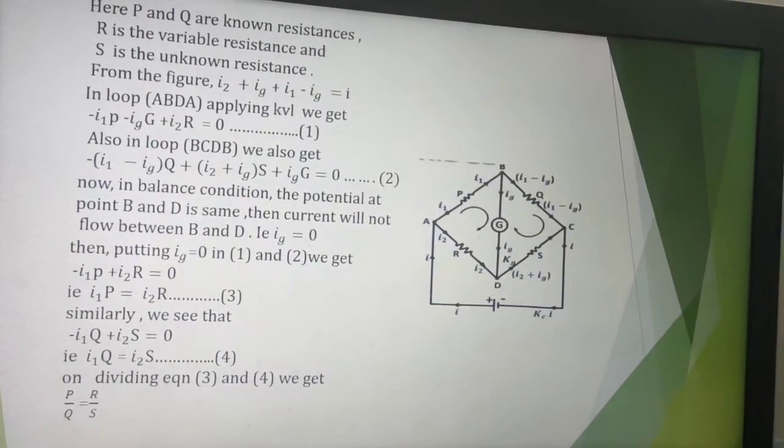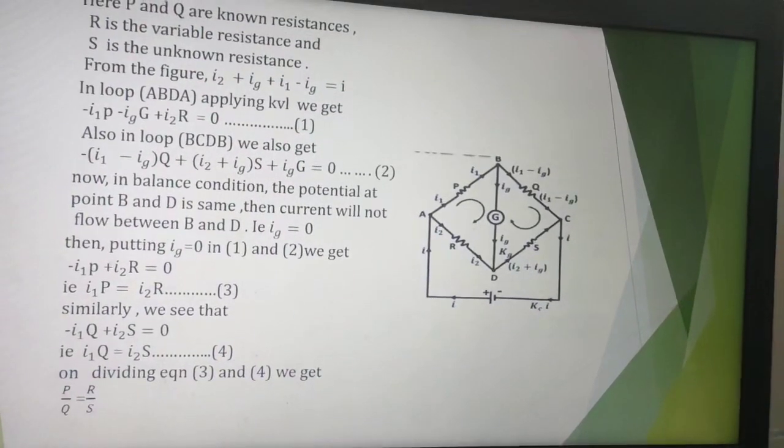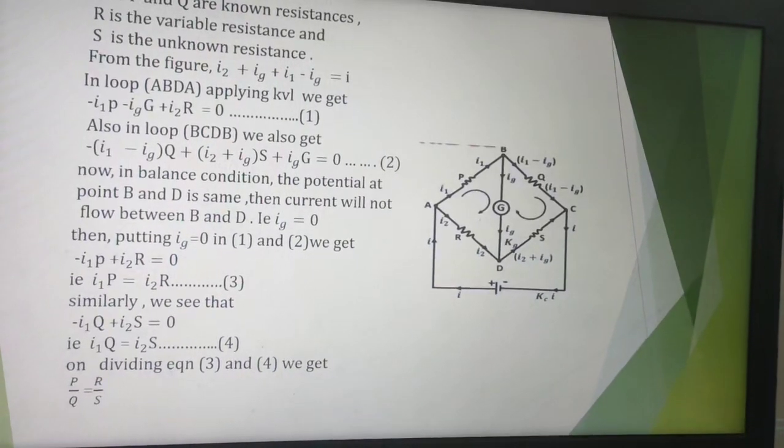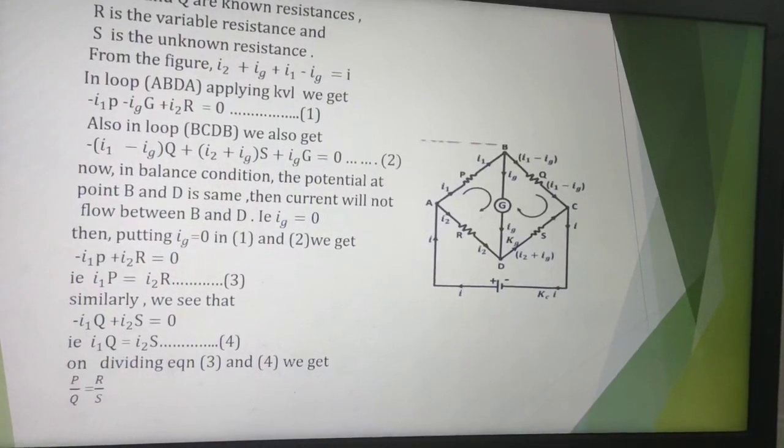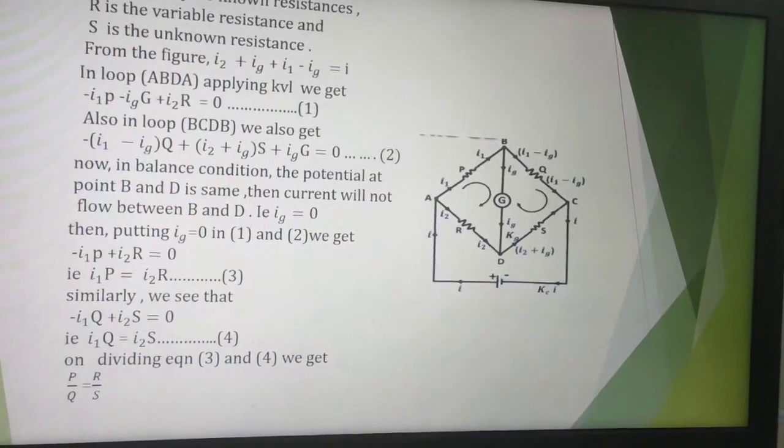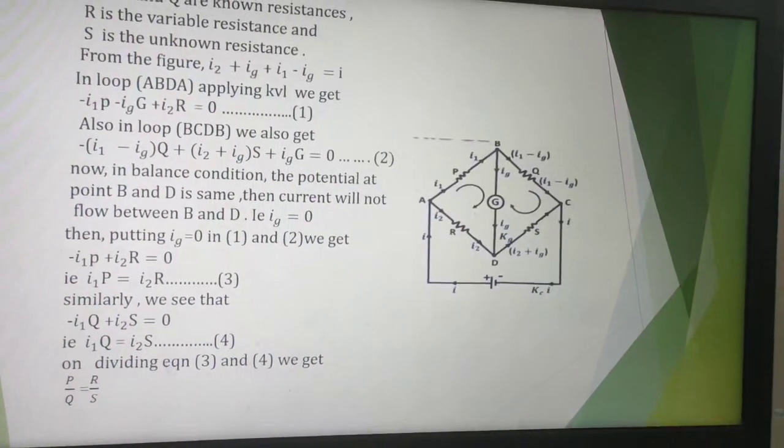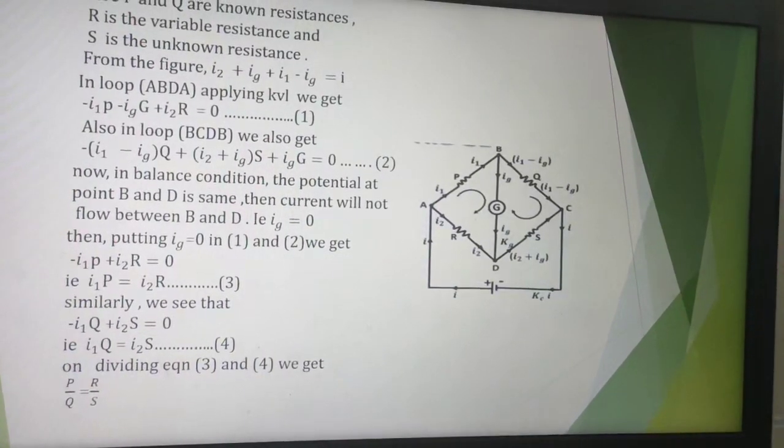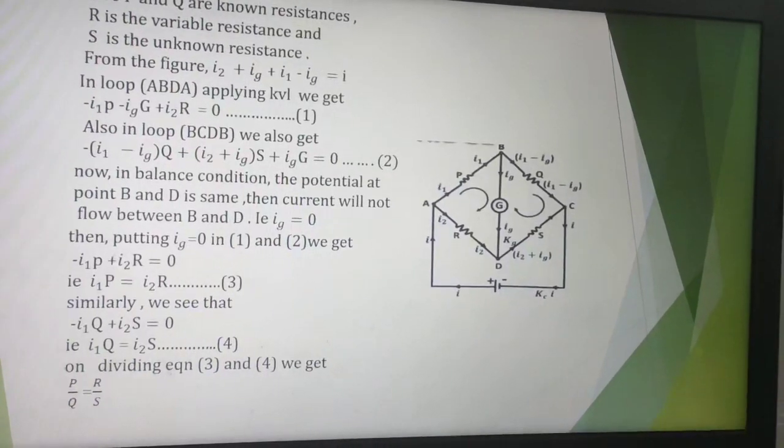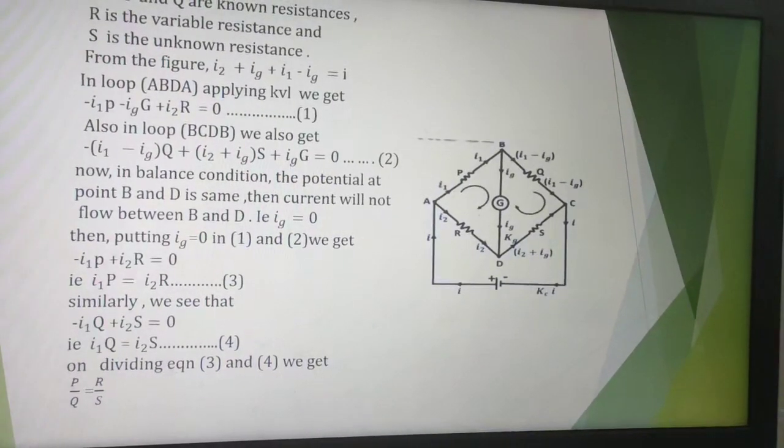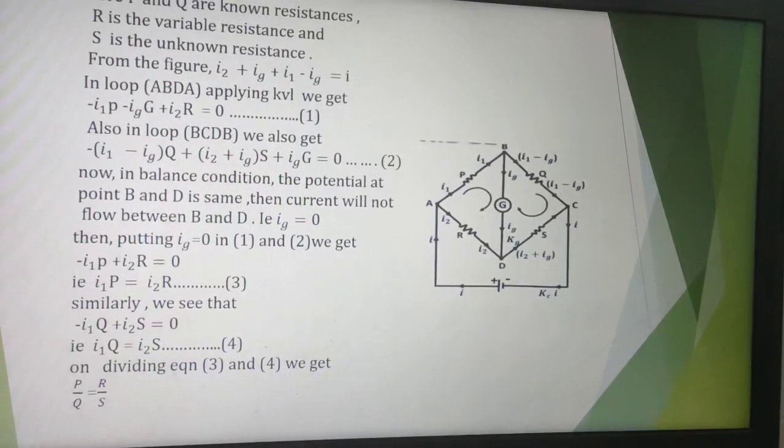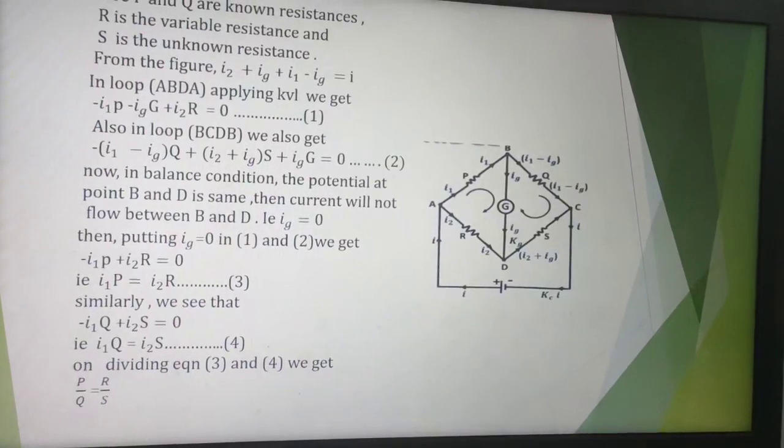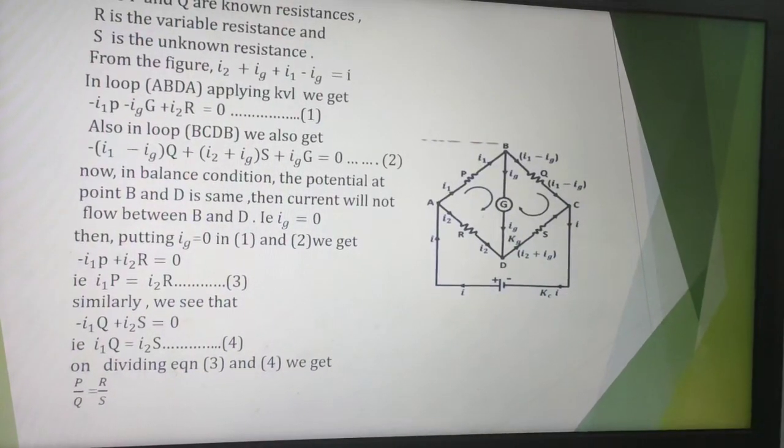Now also in loop BCDB we also get: In region BC, (I1 - IG) into Q. Here the sign will be negative because current direction and the loop direction is same. Now in region CD, (I2 + IG) into S. Here we will get positive sign because the current direction and the loop direction are opposite, which is equal to 0. This is equation 2.